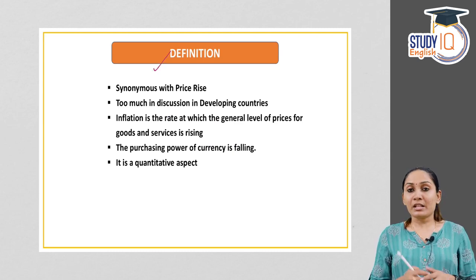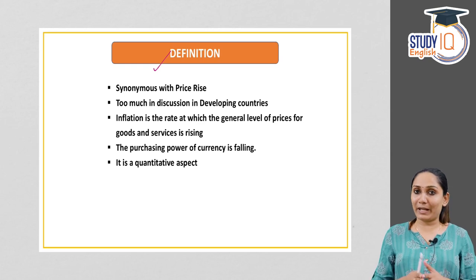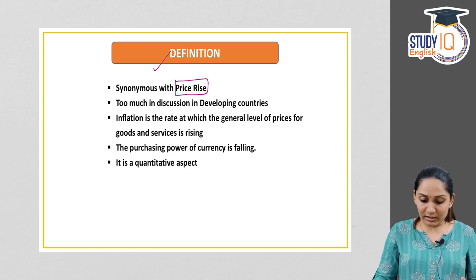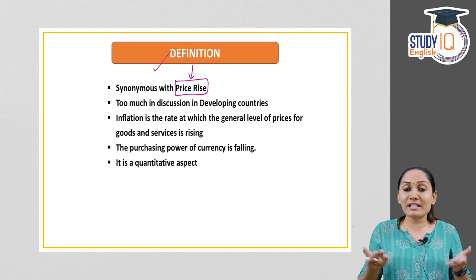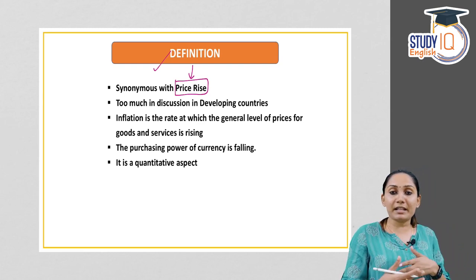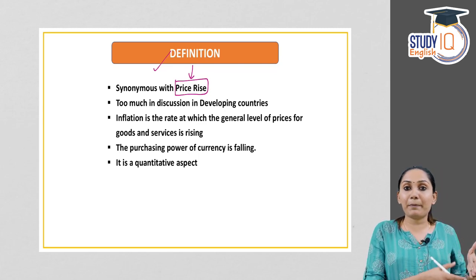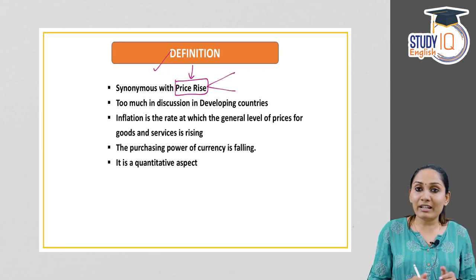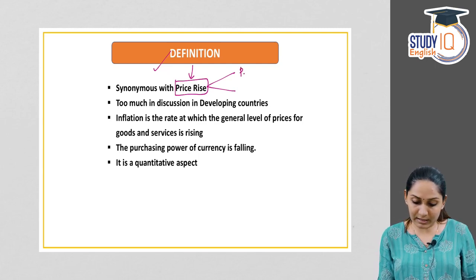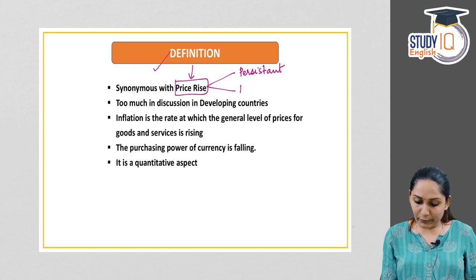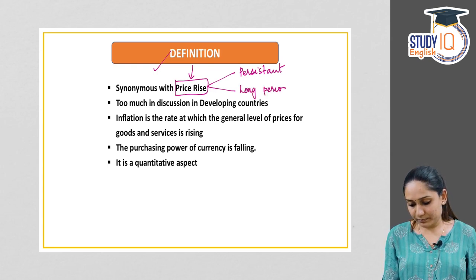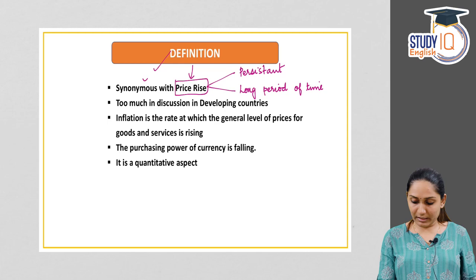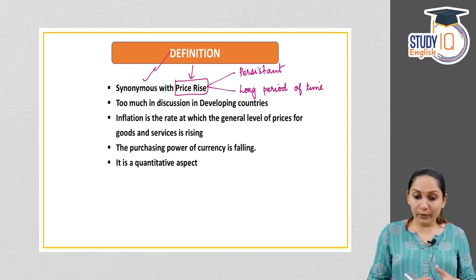First, coming to the definition of inflation. Inflation is actually a synonym used for price rise. In layman language, inflation means a price rise. Technically speaking, the definition of inflation is a persistent rise in the prices of commodities or goods and services for a long period of time. Two things are very important here: one is the persistent rise — persistent meaning continuous — and second, for a long period of time. This is the definition of inflation.